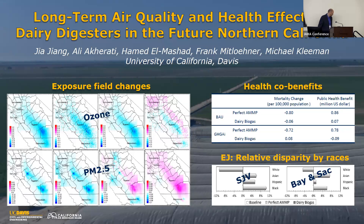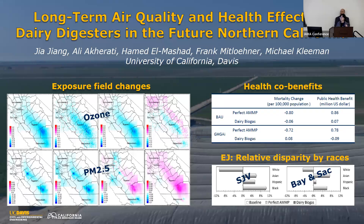Jill from UC Davis presents work on dairy emissions and air quality in California. California is the largest dairy producer in the nation, contributing significantly to ammonia-like emissions in the US. Dairy control technologies such as dairy digesters have been adopted in California, converting manure into biogas to generate electricity and effectively reduce emissions. However, there are discussions about the environmental impacts of these digesters. The study uses a 3D air quality model to produce high-resolution exposure fields for the San Joaquin Valley and assess air quality and health impacts.